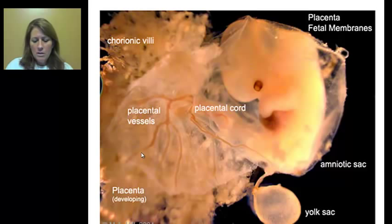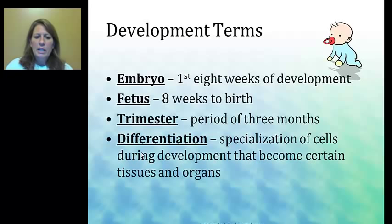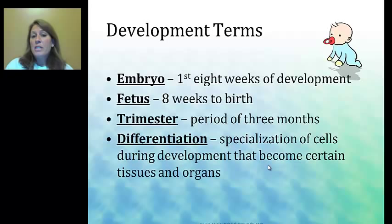Some terms to distinguish: the first eight weeks it is classified as an embryo, and from eight weeks to birth, it is then a fetus — that will be a question on the test. Trimesters are periods of every three months: first, second, third trimester. When cells differentiate, that is where you have specialization of the cells — during the ectoderm, mesoderm, and endoderm stages, those layers are becoming specialized into heart cells, liver cells, and all those tissues.